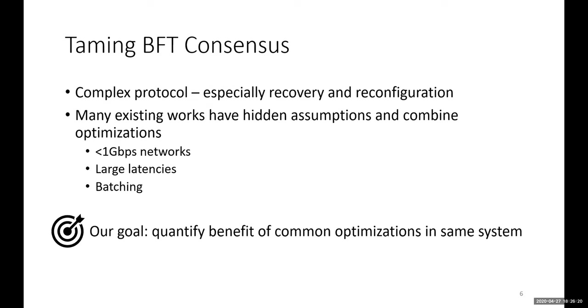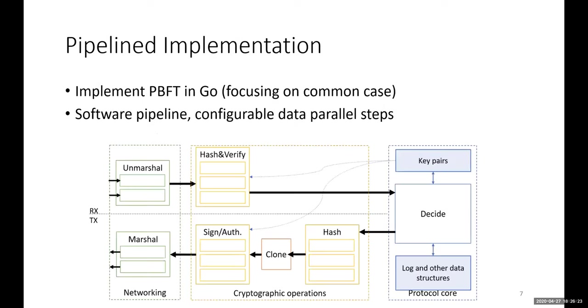Our goal with this work is to quantify the benefits of different optimization strategies within the same framework. We implemented PBFT in Go, focusing on the common case behavior. We built with Go routines a highly parallel and parametrizable design. As you see, there's a software pipeline. As messages arrive from the network, they are unmarshalled and parsed in parallel. Then there's a data parallel step for hashing and verifying messages. The core protocol decision step has to be serial on a single thread, but for hashing and signing outgoing messages, we can rely on multiple threads in parallel.